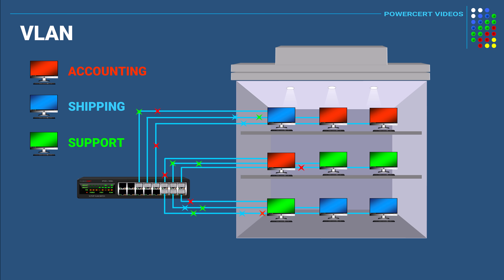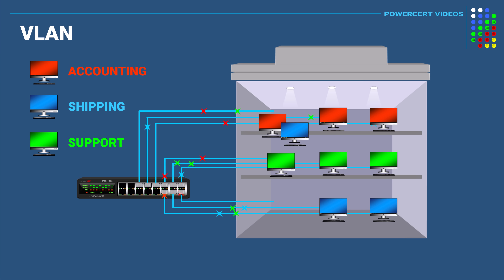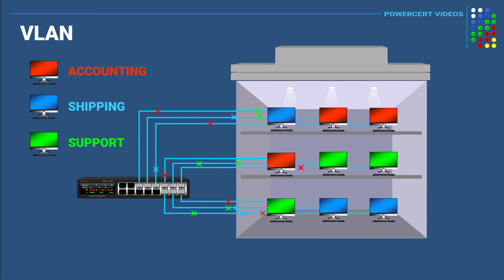Now suppose as a network administrator, you wanted to separate the network broadcast traffic between these departments from each other, so that the accounting department doesn't see any traffic from support, support doesn't see any traffic from shipping, and so on. One way to solve this is to physically move the computers that belong to the same department and put them together, such as putting them on the same floor and deploying extra network hardware and cabling. But this could be a hassle and unnecessary work.